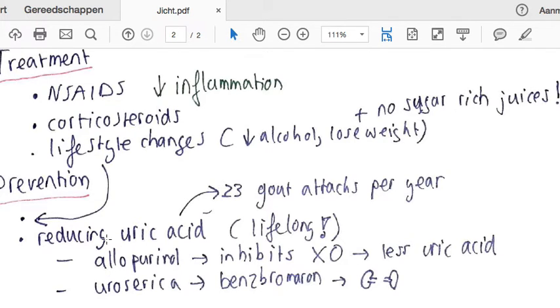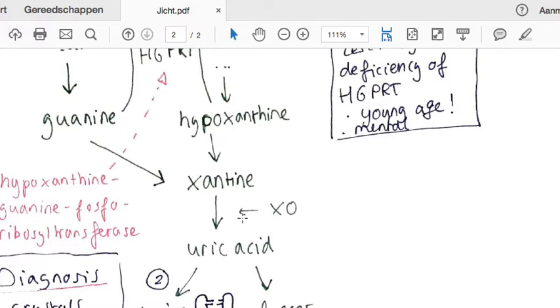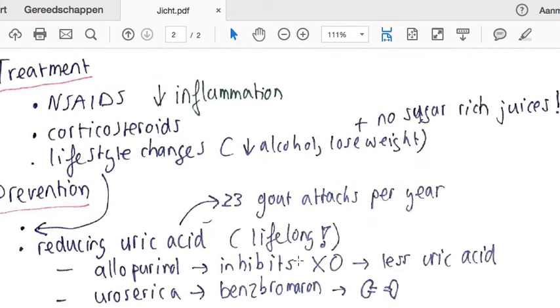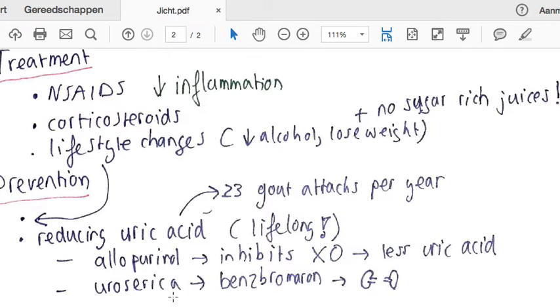A medication you can use for that is allopurinol, and this inhibits the xanthine oxidase enzyme. So this is over here, and if you inhibit this one, you'll get less uric acid and more of these products. You can also use a uricosuric, and that one's called benzbromarone, and that has to do something with the kidneys. I forgot the detail, but I think it was something with increased excretion. But important to know is that this will not work if you have a too low glomerular filtration rate or too much kidney failure.